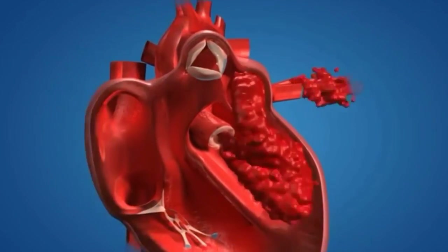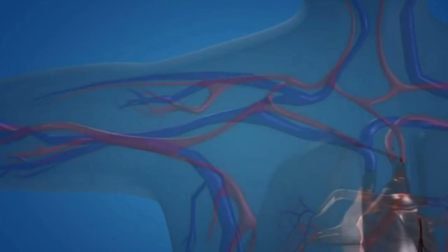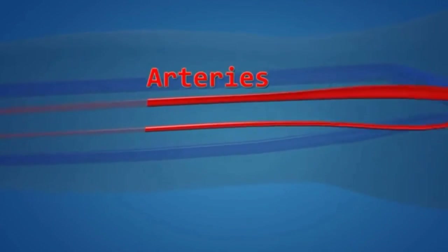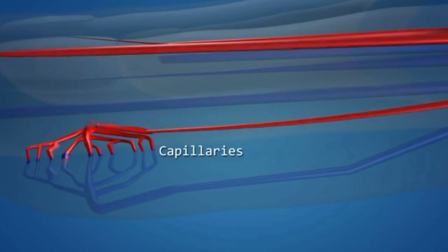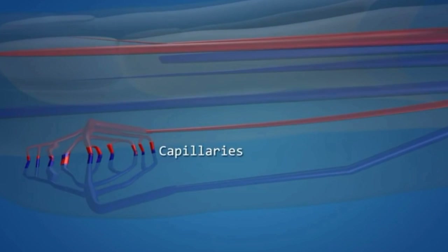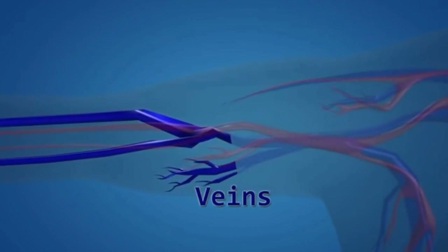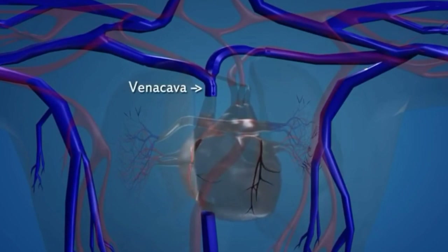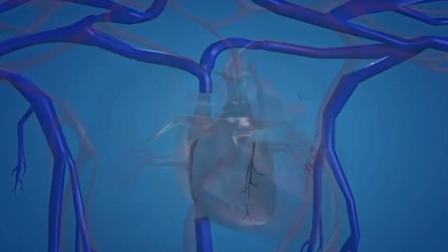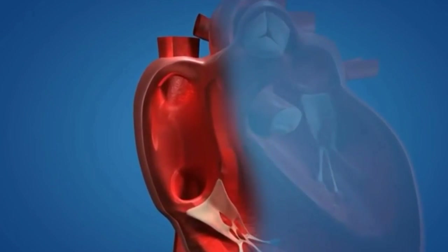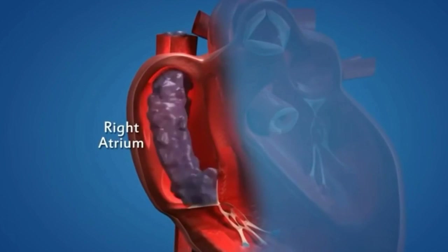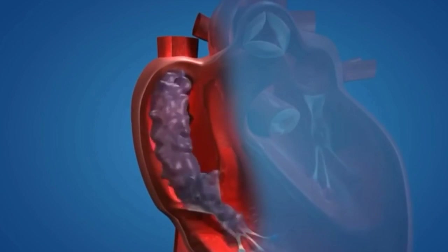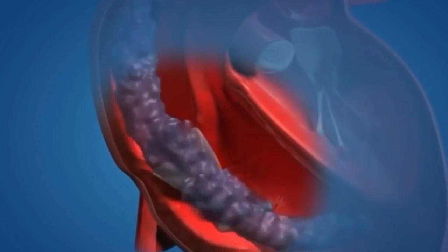The aorta is the largest artery of the body. For blood to enter the aorta, the aortic valve must open. Once blood enters the aorta, it is supplied all over the body. In the cells, oxygen is used to burn glucose, producing carbon dioxide. This CO2-rich blood is collected by the veins from all parts of the body and drained into the heart via the vena cava — superior vena cava from the upper parts and inferior vena cava from the lower parts.